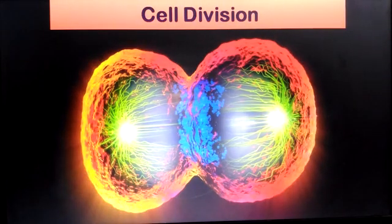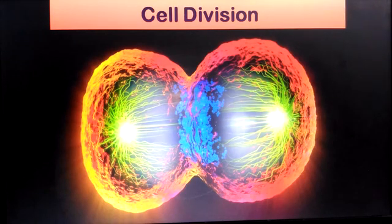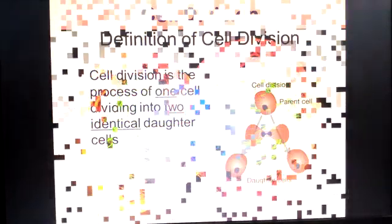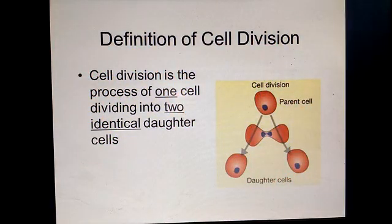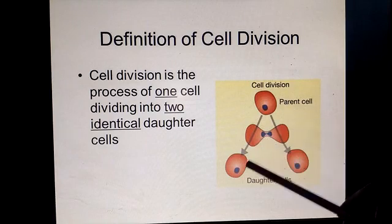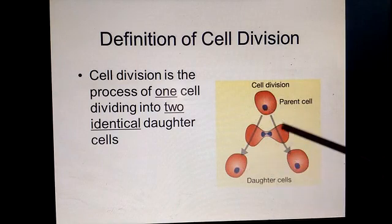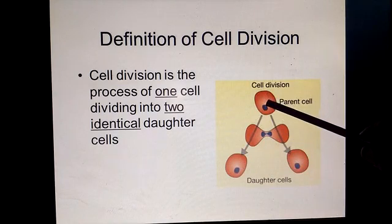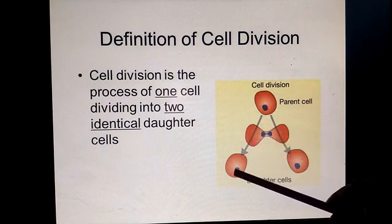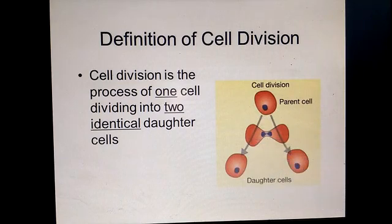Good morning dear children. In this class we are going to learn about cell division. What is cell division? The division of the cells. A single cell divides into two daughter cells, then it is multiplied by the same method. That is called cell division. Cell division is the process of one cell dividing into two cells that are identical to the parent.